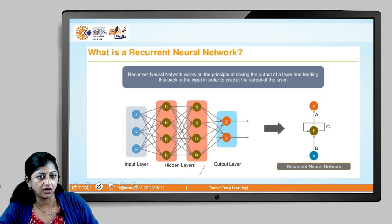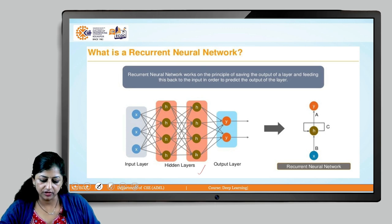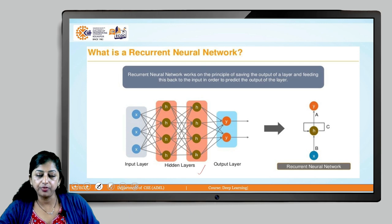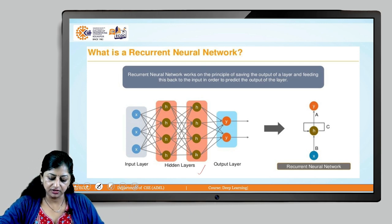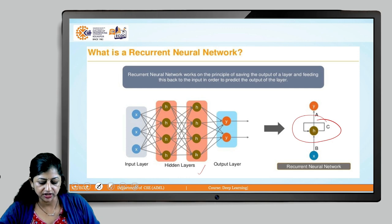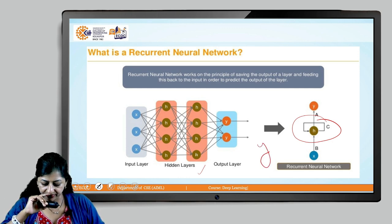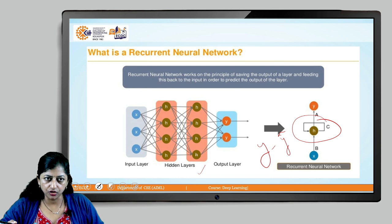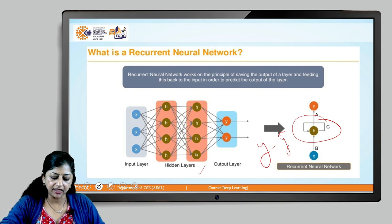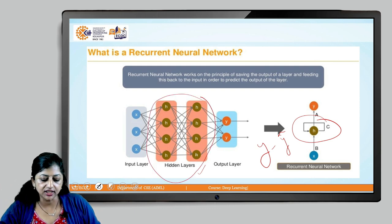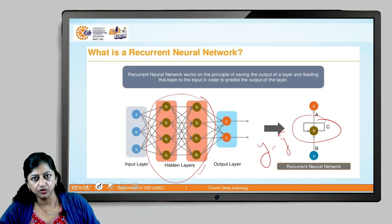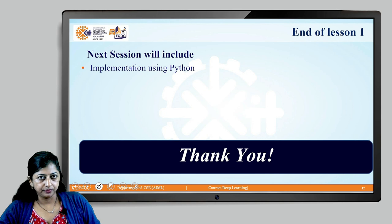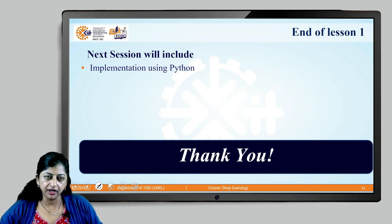Recurrent neural networks work on the principle of saving the output of the previous layer — which was not the case with feed forward neural networks — and feeding it back to the input in order to predict the output of the next layer. The feedback mechanism helps reduce error: the difference between the actual output and the predicted outcome (y-hat). If the error is large, the feedback looping mechanism incorporated into the hidden layer helps minimize it.